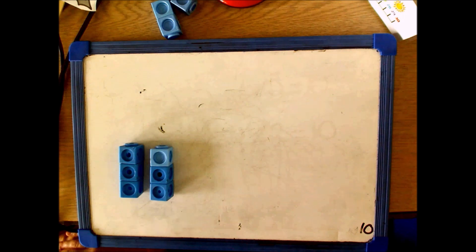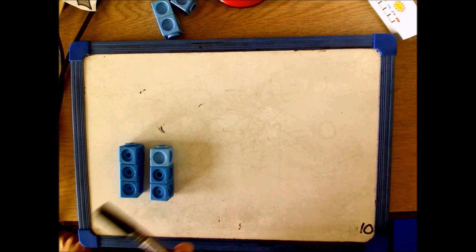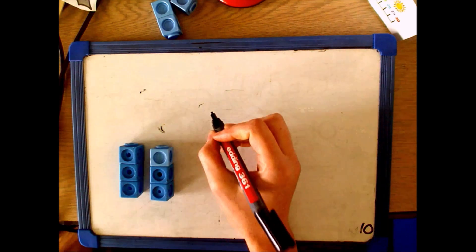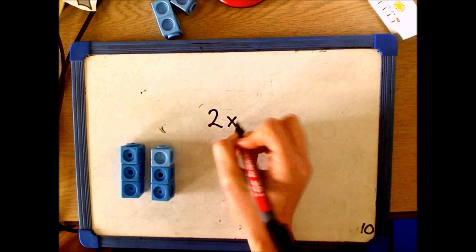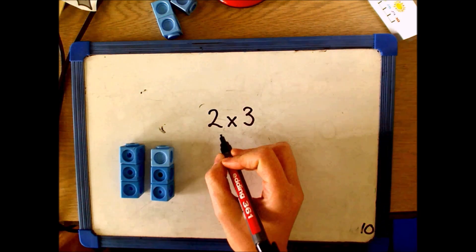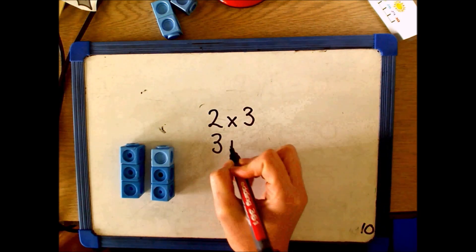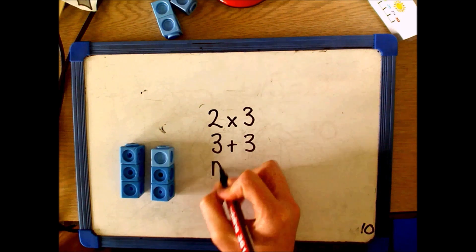As part of multiplication we also need to explore doubling and how it is linked. Doubling means 2 equal groups. So here we have 2 equal groups of 3, or 3 add 3, or double 3.